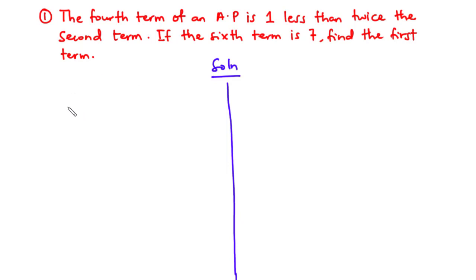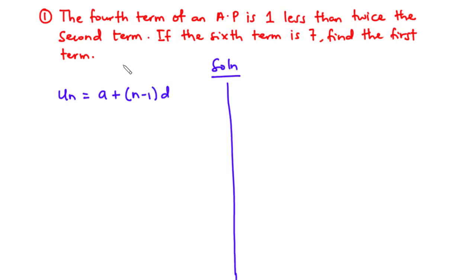We know that the nth term, or the general term, of an AP is given by: u_n = a + (n - 1)d, where a is the first term, d is the common difference, and n is the number of terms. Let's write down the expressions for the fourth term, the second term, and the sixth term.